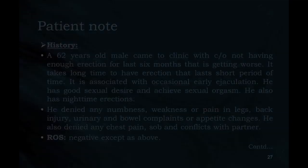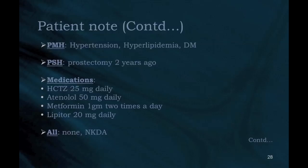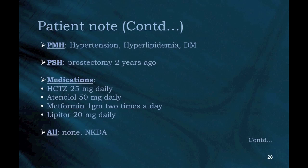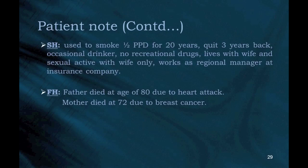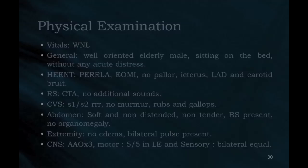Past Medical History: Hypertension, hyperlipidemia, diabetes mellitus. Past Surgical History: Prostatectomy 2 years ago. Medications: Hydrochlorothiazide 25 mg daily, atenolol 50 mg daily, metformin 1 g twice a day, Lipitor 20 mg daily. Allergies: No known drug allergy. Social History: Used to smoke half pack per day for 20 years, quit 3 years back; occasional drinker; no recreational drugs; lives with wife and sexually active with wife only; works as regional manager at insurance company. Family History: Father died at age 80 due to heart attack; mother died at 72 due to breast cancer.